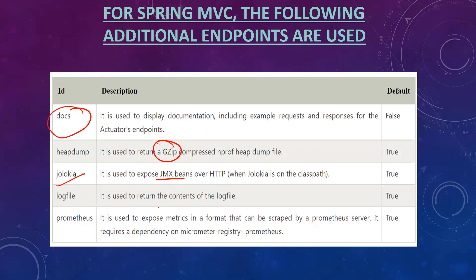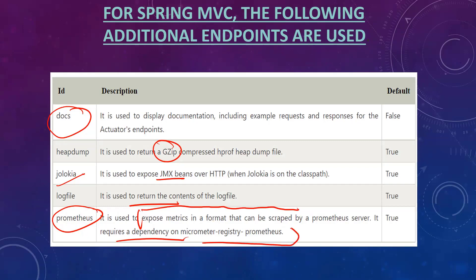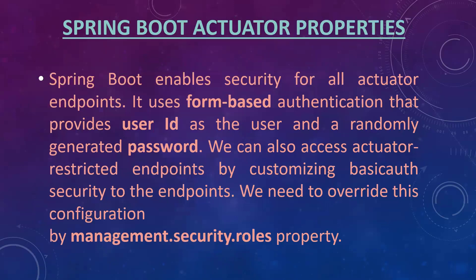The jolokia endpoint exposes JMX beans over HTTP, and jolokia needs to be on the classpath. The log-file endpoint returns the content of the log file. The Prometheus endpoint exposes metrics in a format that can be scraped by a Prometheus server — it requires a dependency on micrometer-registry-prometheus. It is essentially a UI tool for visual monitoring.